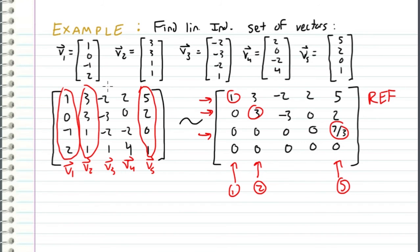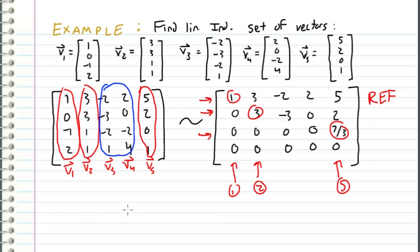Where these two, V3 and V4, are linearly dependent, which means they must be combinations of V1, V2, and V5. So our answer is simply V1, V2, and V5.